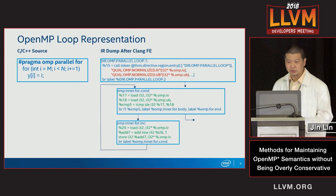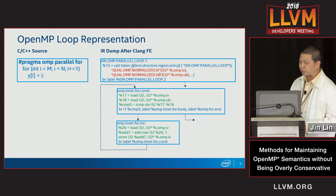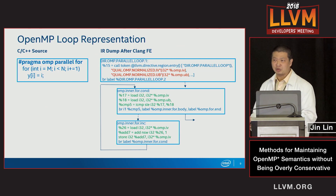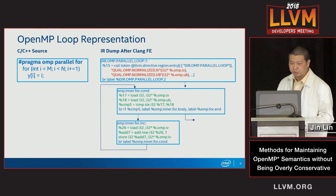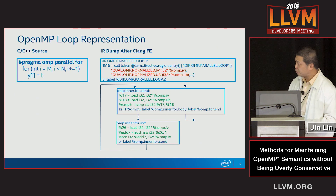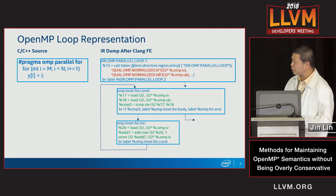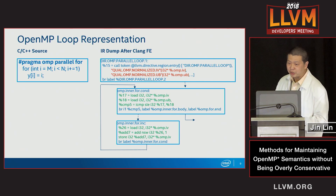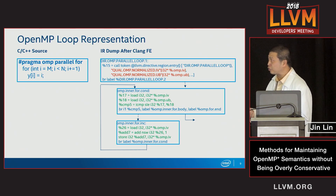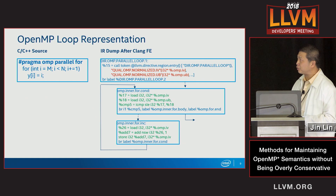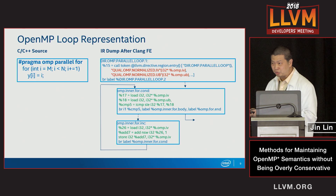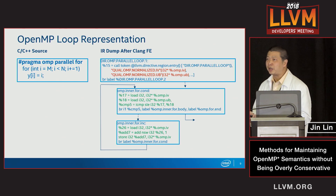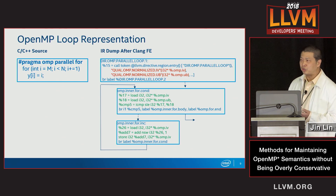Here's one example showing how to represent the OpenMP loop. On the left-hand side, there's an OMP parallel for. On the right-hand side, clang normalizes the loop, then uses a normalized IV to represent the loop induction variable, and uses a normalized upper bound to represent the upper bound. We can see that the loop index and the upper bound are address-taken, so that's how we can preserve the loop structure throughout the optimizations.